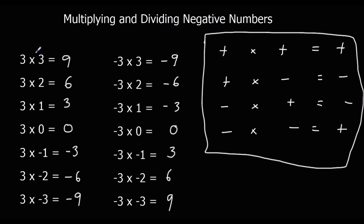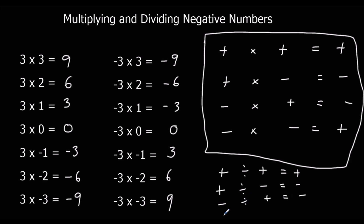It's the same rules for dividing negative numbers. So a positive divided by a positive is a positive. A positive divided by a negative is a negative. A negative divided by a positive is a negative. And a negative divided by a negative is a positive. It's the same because dividing and multiplying are pretty much the same operation — they follow the same rules.